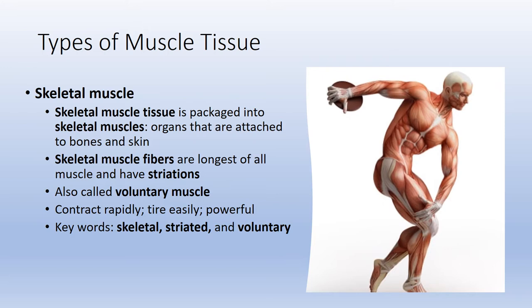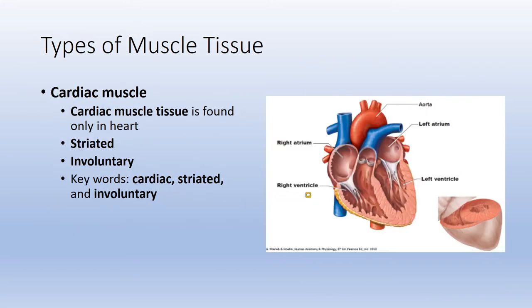We'll start with skeletal muscle. The next type is cardiac muscle tissue — cardiac means heart. We will only find cardiac muscle tissue making up the bulk of the walls of the heart, which we'll see in Module 4 when we get into the cardiovascular system. Cardiac muscle cells are striated, meaning they have alternating bands of dark and light coloring. However, cardiac muscle is involuntary — we can't tell our heart rate to beat faster or tell our heart muscle to contract harder. Key buzzwords: cardiac, striated, and involuntary.